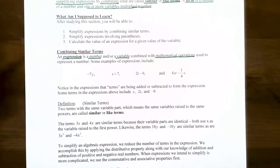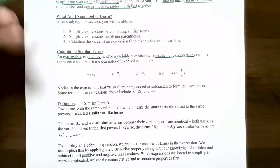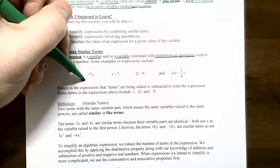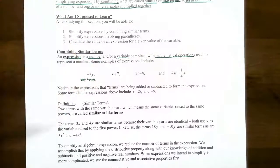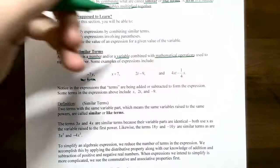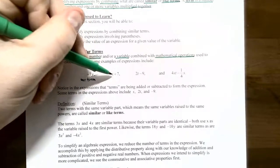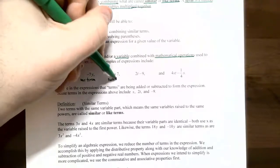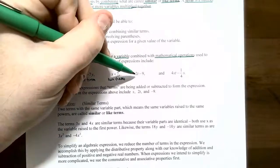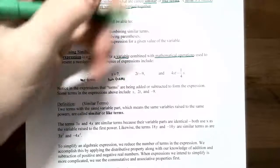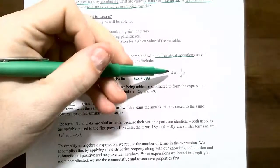Here are some examples of terms. You have negative 7y — a number being multiplied by a variable — and this is called a one-term expression. The next one, x plus 7, has a variable combined with a number using addition; it has two terms: x is one term and 7 is another. Similarly, 2t subtract 9 has two terms: 2t and negative 9, combined with subtraction.